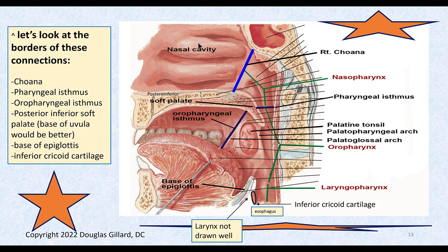What separates the nasopharynx from the nasal cavity? It's the choana — right choana and left choana — also called posterior nasal aperture or posterior nares. Looking at the palatine tonsil: there are two folds of tissue, one anterior called the palatoglossal fold and one behind it called the palatopharyngeal fold. The palatine tonsil sits between these folds. The palatoglossal fold is what's used to make the imaginary demarcation line called the oropharyngeal isthmus.